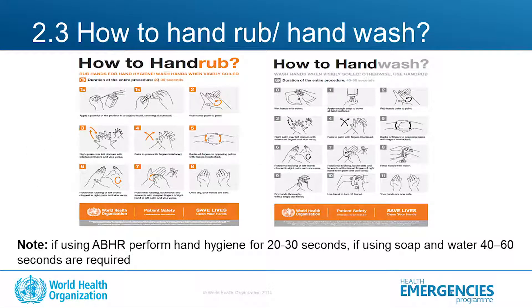How to perform hand rub and hand washing? For hand rub, you can do it for approximately 20 to 30 seconds. The diagram you see here goes through each of the nine steps. For hand washing, you use soap and water and need a bit more time — usually between 40 to 60 seconds.